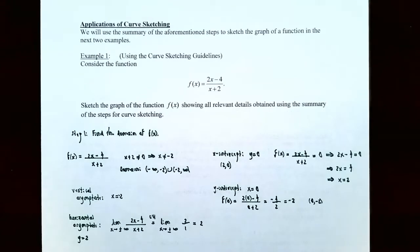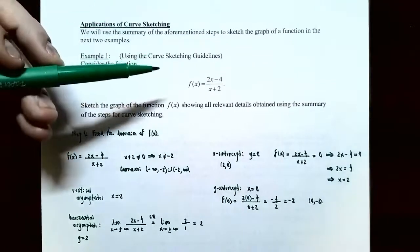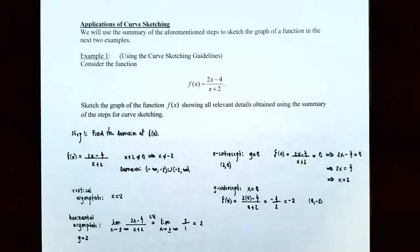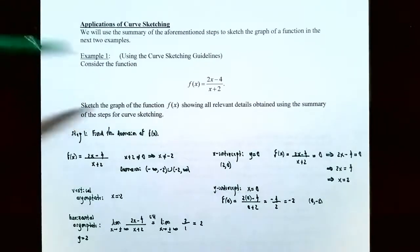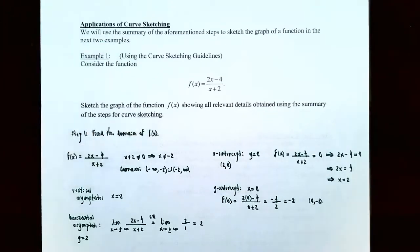Now we'll use the summary of the four-step process in the next two examples. Example one, using the curve sketching guidelines: consider the function f(x) = (2x − 4) / (x + 2). Sketch the graph of f(x) showing all relevant details obtained using the summary of the steps for curve sketching.